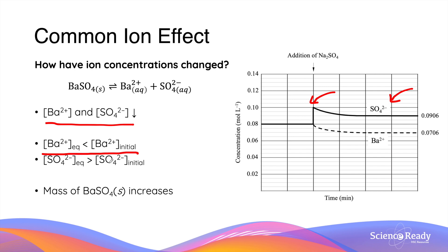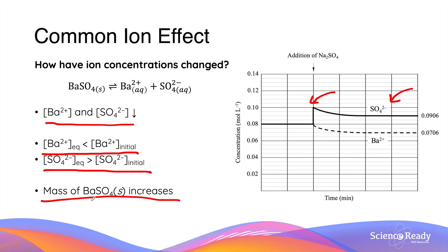The important detail not to miss is that barium concentration in the new equilibrium state is now less than the initial concentration in the old equilibrium, whereas the sulfate concentration is now greater than what it was initially. You can refer to the graph on the right side to correlate and compare the two concentrations. As the ion concentration changes shown, the amount of barium sulfate precipitate increases, as we saw earlier.